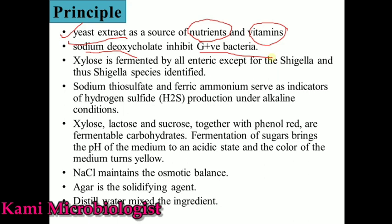Then we have xylose. When xylose is fermented, enteric bacteria will be easily seen. However, Shigella does not ferment xylose, due to which we get reddish colonies. Then we have sodium thiosulfate and ferric ammonium citrate, which serve as indicators for hydrogen sulfide. When sugars are fermented, hydrogen sulfide is produced, which is detected by sodium thiosulfate and ferric ammonium citrate under alkaline aerobic conditions.